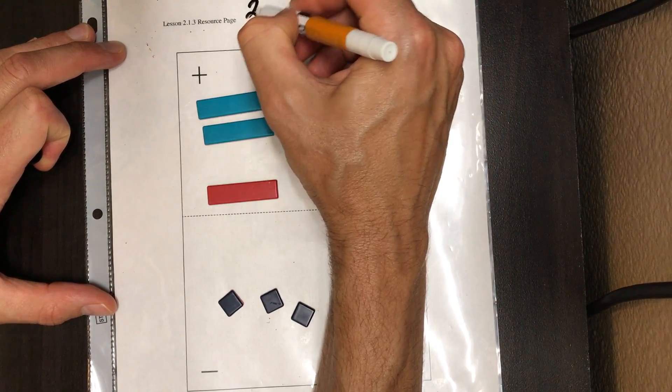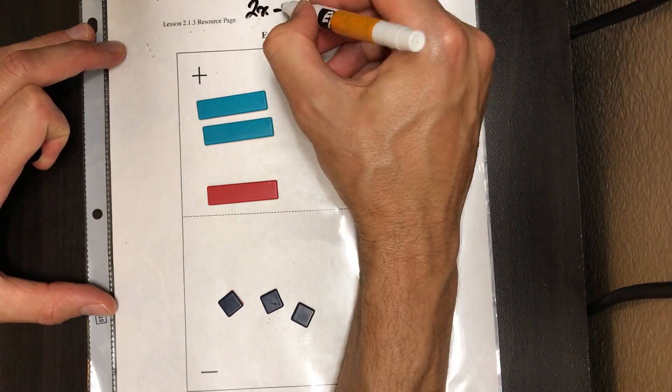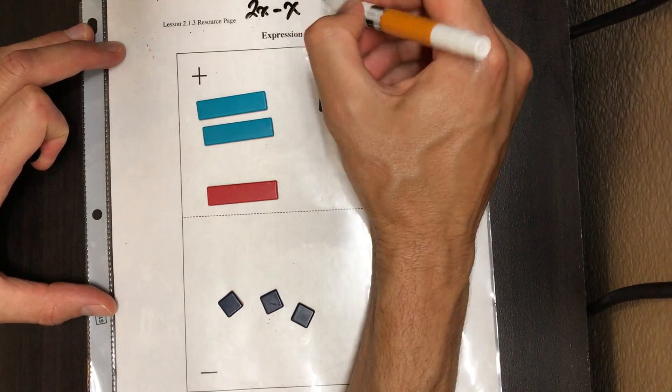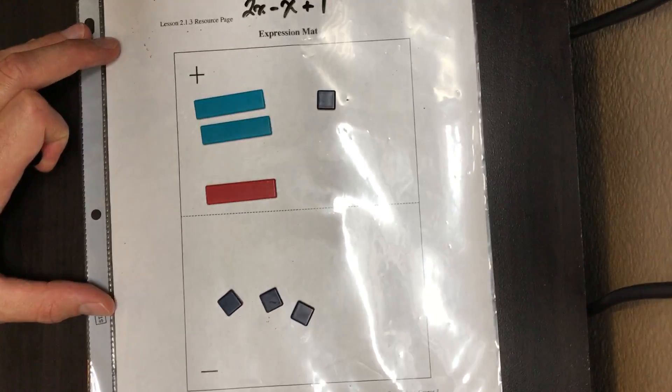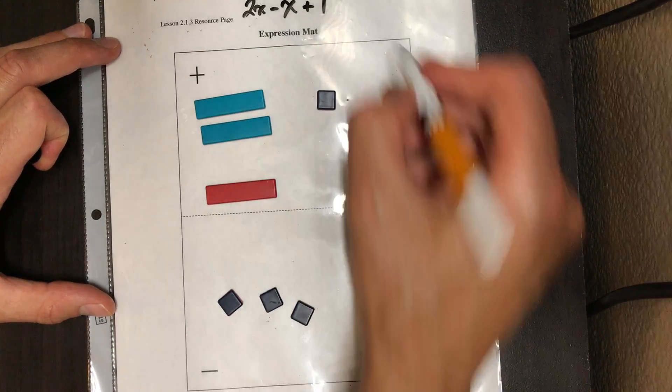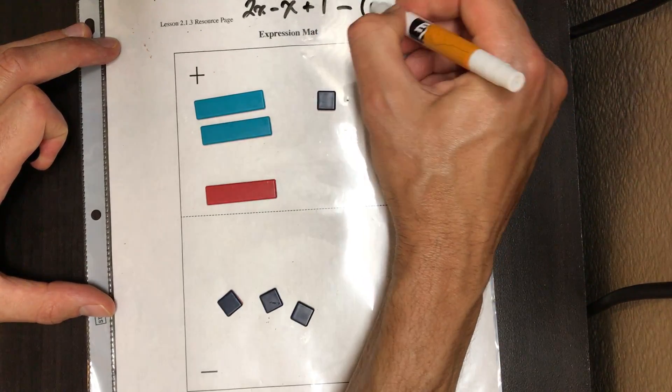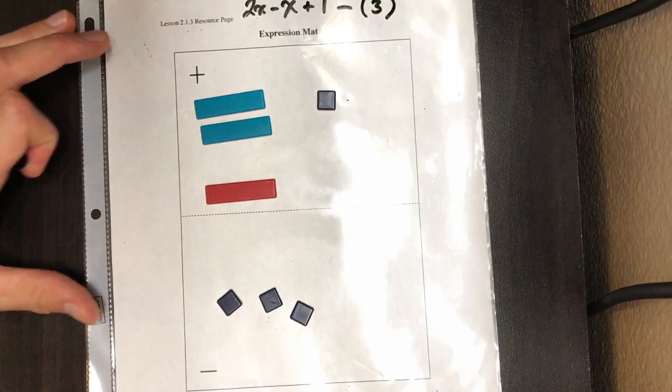Let's start with up here. We've got two x's, we're taking away one x, and then we've got one. And then over here we've got the opposite of three. That's what this looks like right now.